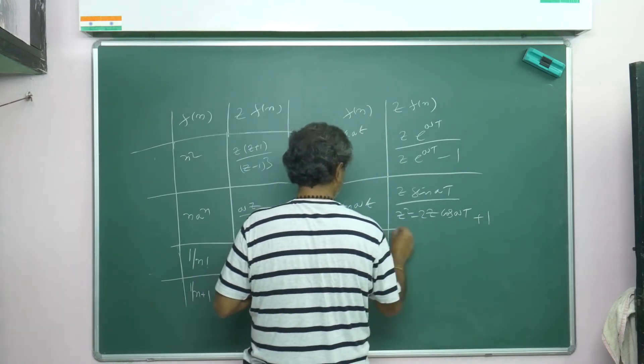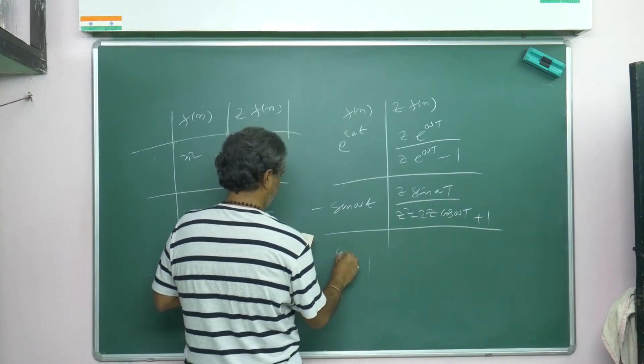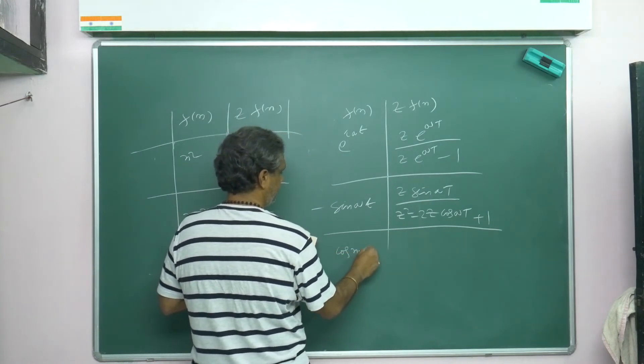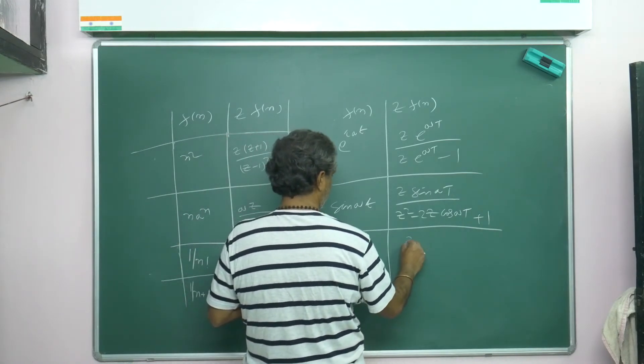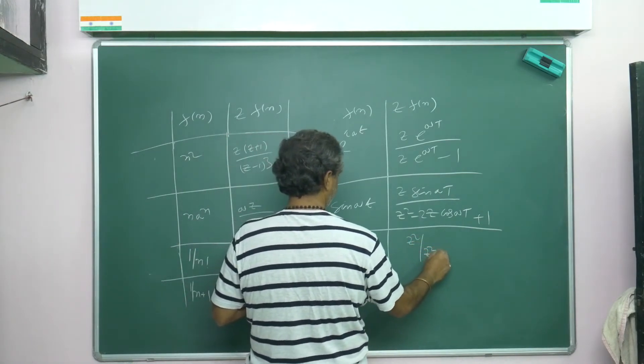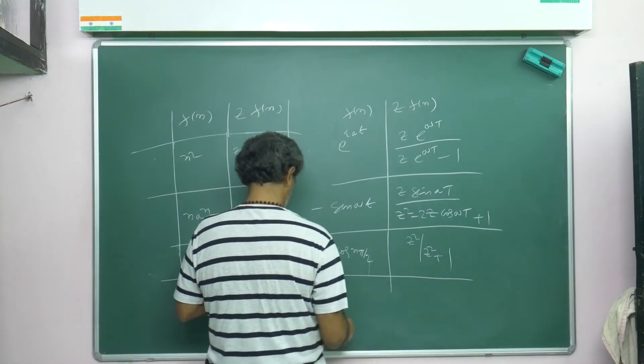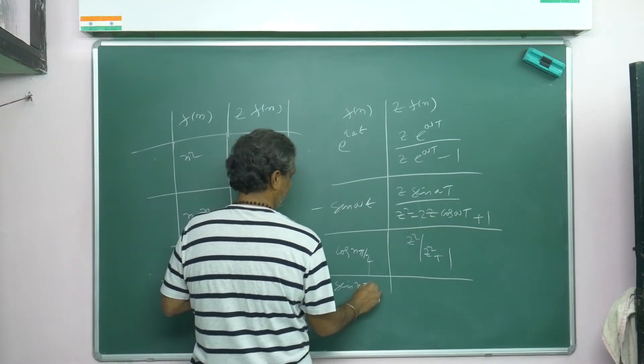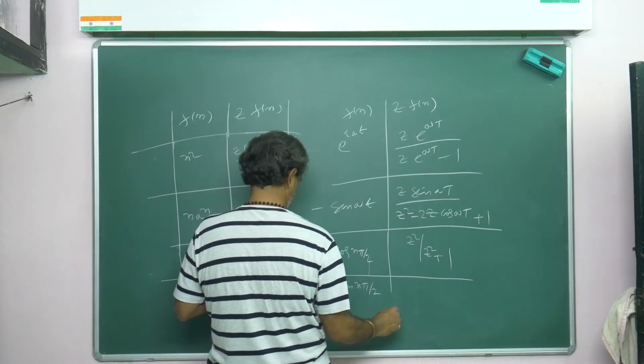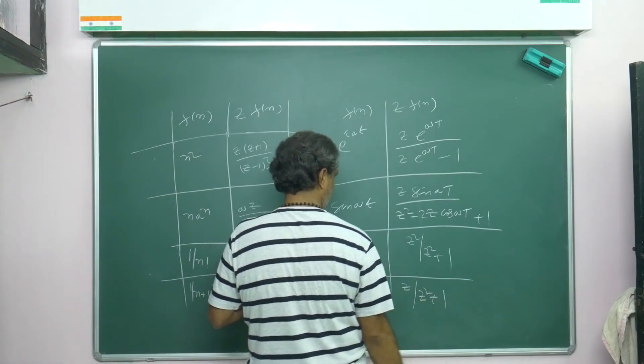This is very, very important. Z{cos(nπ/2)} equals z²/(z²+1). Then Z{sin(nπ/2)} equals z/(z²+1). These all I will prove, don't worry.